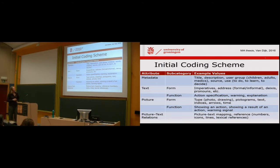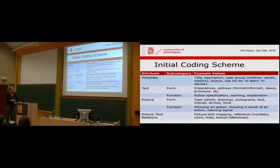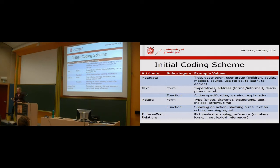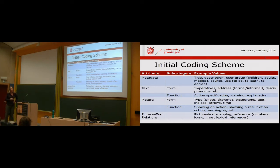In the coding scheme, we have some metadata for every document, something about the text, something about pictures, and something about text-picture relations. For pictures, we have form and function, and the same for text. Metadata: we note the title, description, user group — children, adults, medics. Source, use: what are these things used for — to do something or to learn something? For text form, we look at how are the actions presented — in terms of imperatives, what is the address, formal or informal, is there any 'du' or 'Sie' — these are familiar German words — and pronouns.